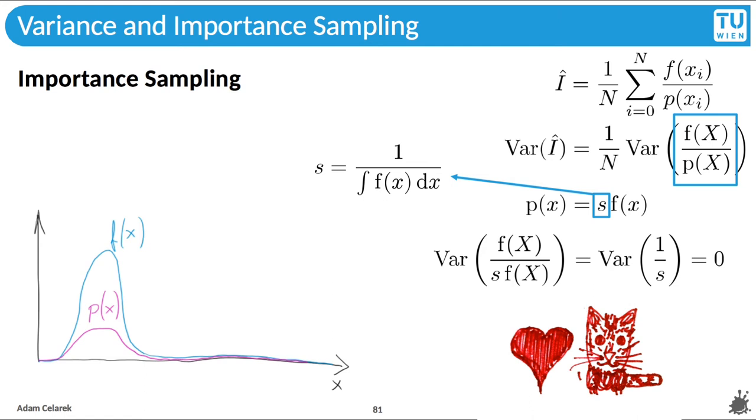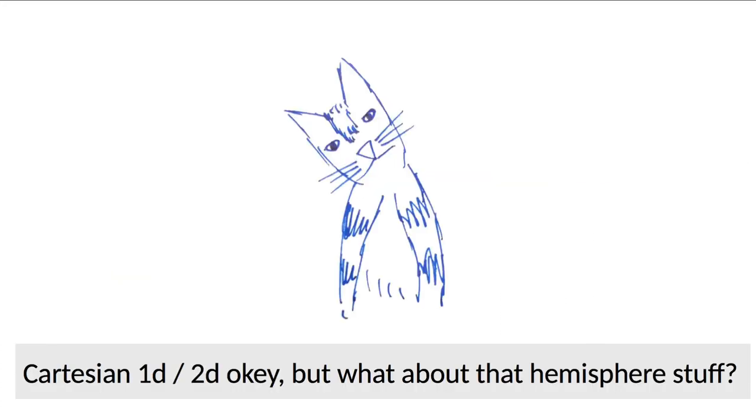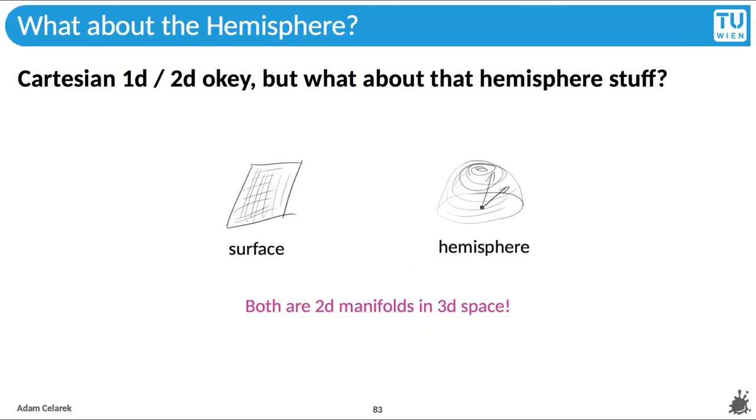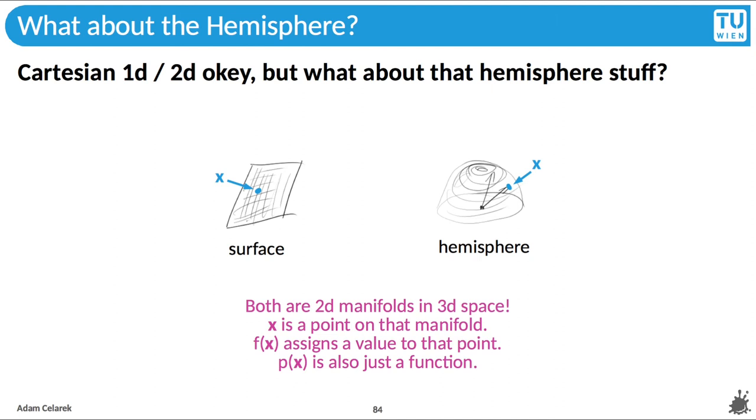Before that, let's try to understand how to apply Monte Carlo in rendering. In the last lecture, we had those hemispheres. And it's not immediately clear how the 1D, 2D stuff that we saw now maps to these hemispheres. Functions on the hemisphere, that might be hard to imagine, it's a bit weird, no? Well, a 2D Cartesian coordinate plane can be seen as a surface in 3D. We call such a surface a 2D manifold in 3D space. Locally, you can move in two independent directions. You can do the same on a hemisphere. Locally, you can move in two independent directions. It's just another manifold in space.